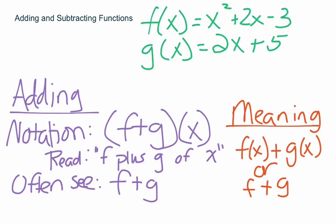A lot of students, especially in Algebra 2, are bothered by the of x. They see that as multiplication — distributing the x through. I understand that it looks like that, but that is not what that notation means. It simply means you are going to add the two functions together. If you are prone to mistakes where you start multiplying extra x's into the problem, I will note that on your homework. So read those notes and correct those mistakes, finding ways to get around it.